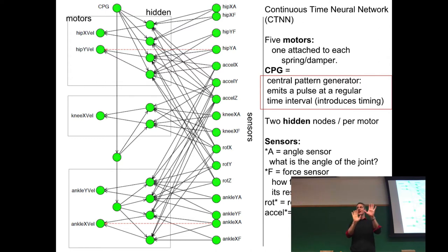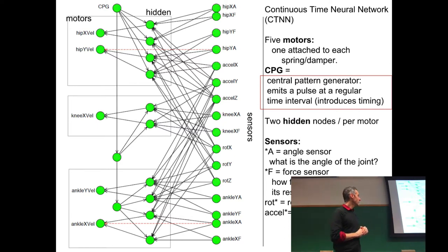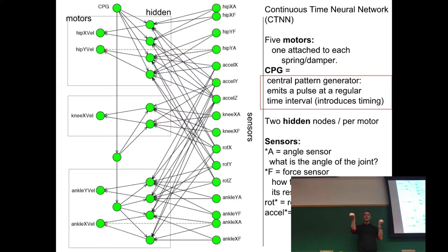The five motor neurons ending in 'VEL' indicate velocity control. A positive value tries to increase the length of the spring; a negative number compresses it. A big negative number compresses quickly; a small negative number compresses slowly; zero means don't change; a small positive number expands slowly; a big positive number expands quickly.